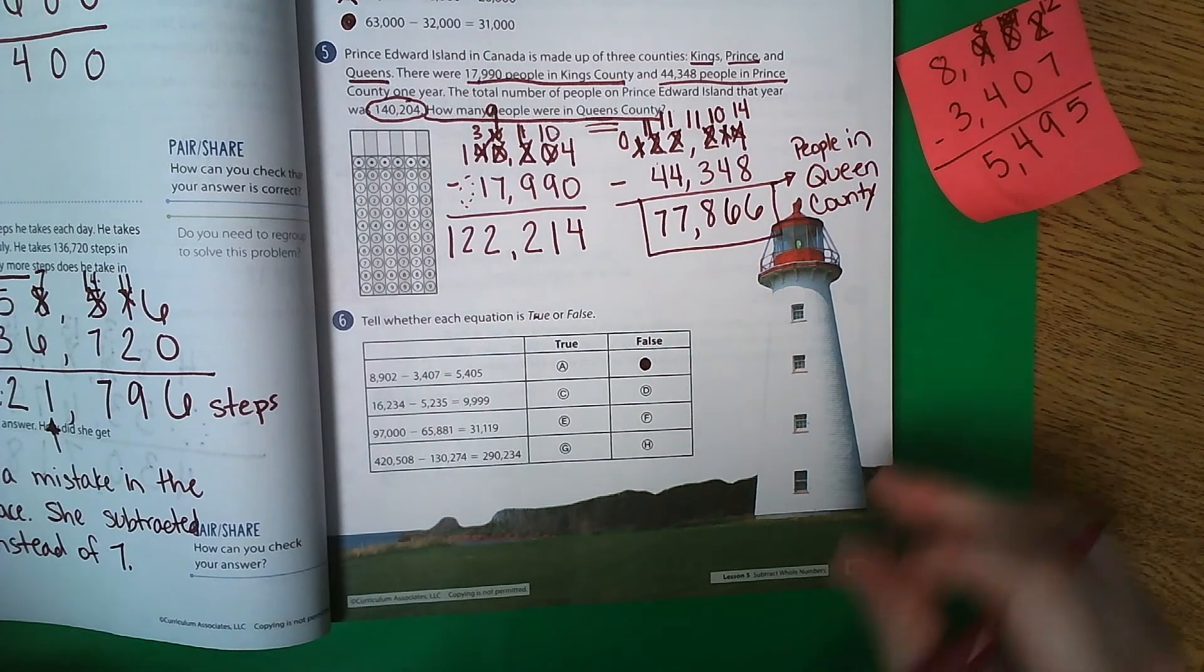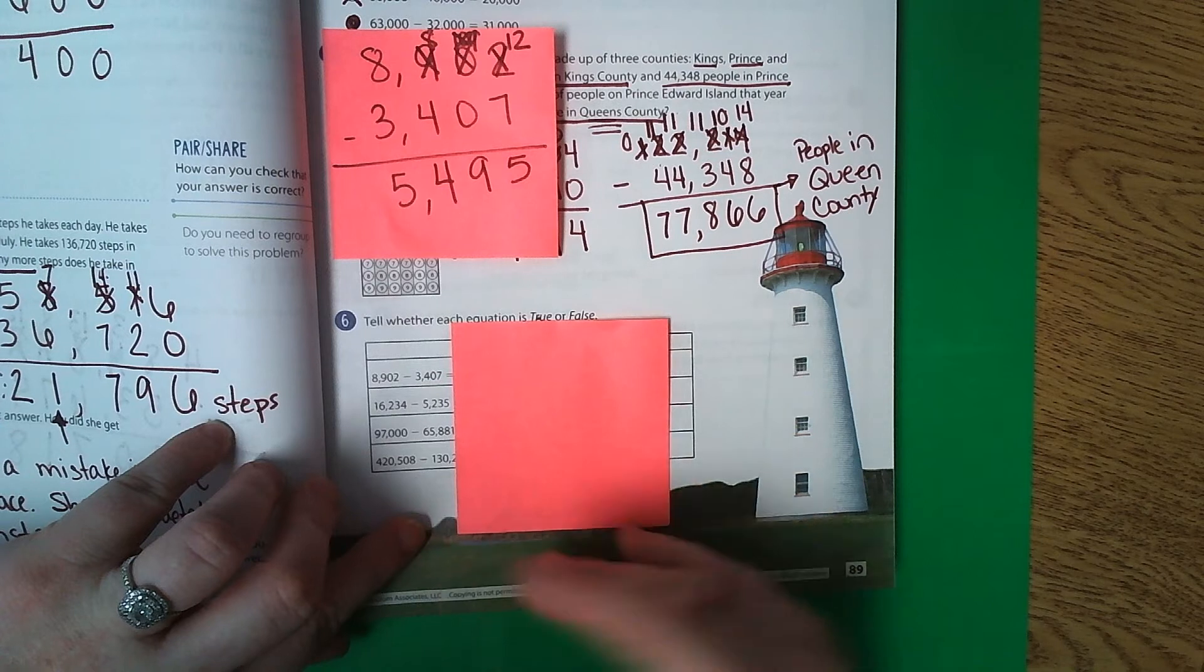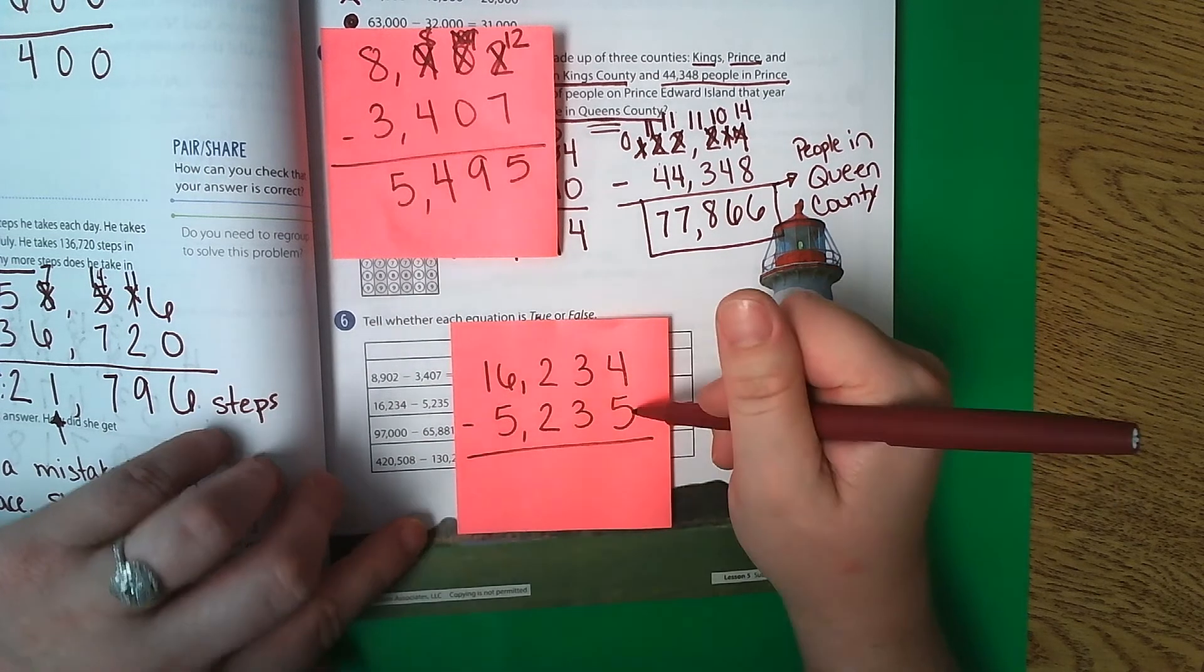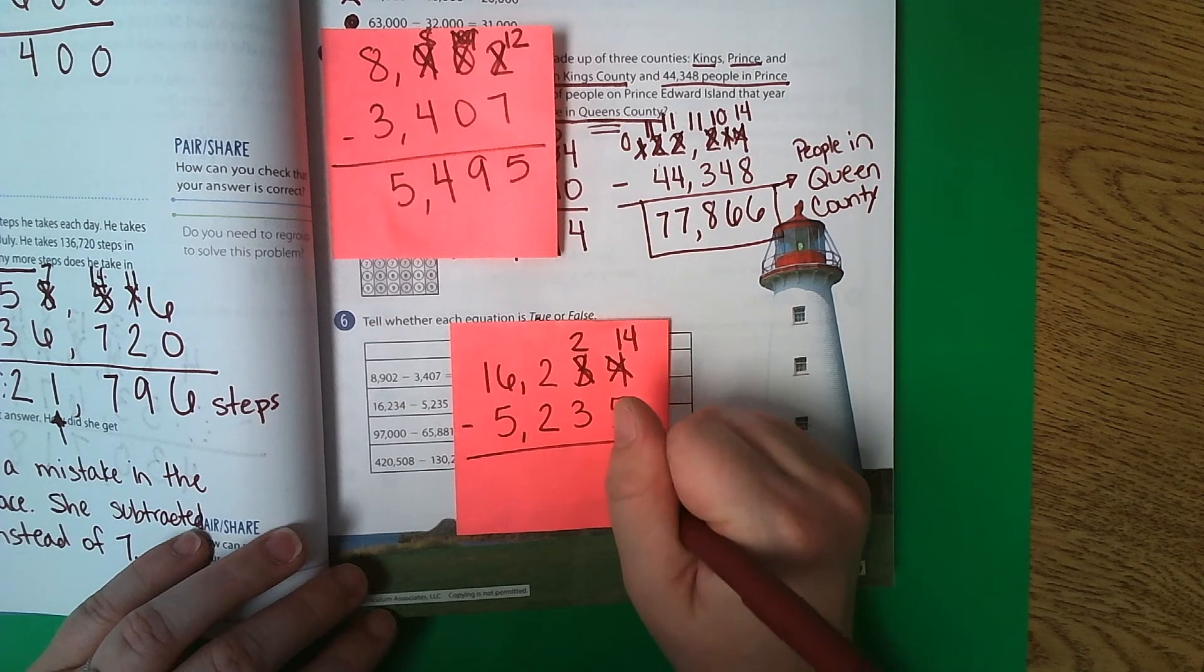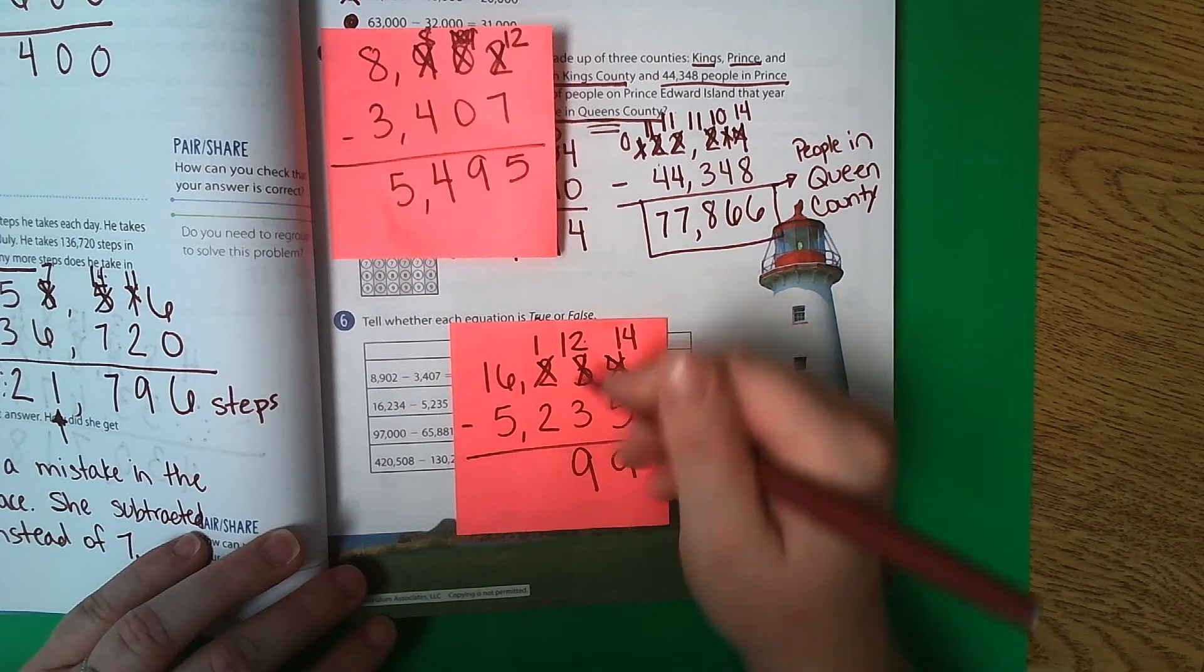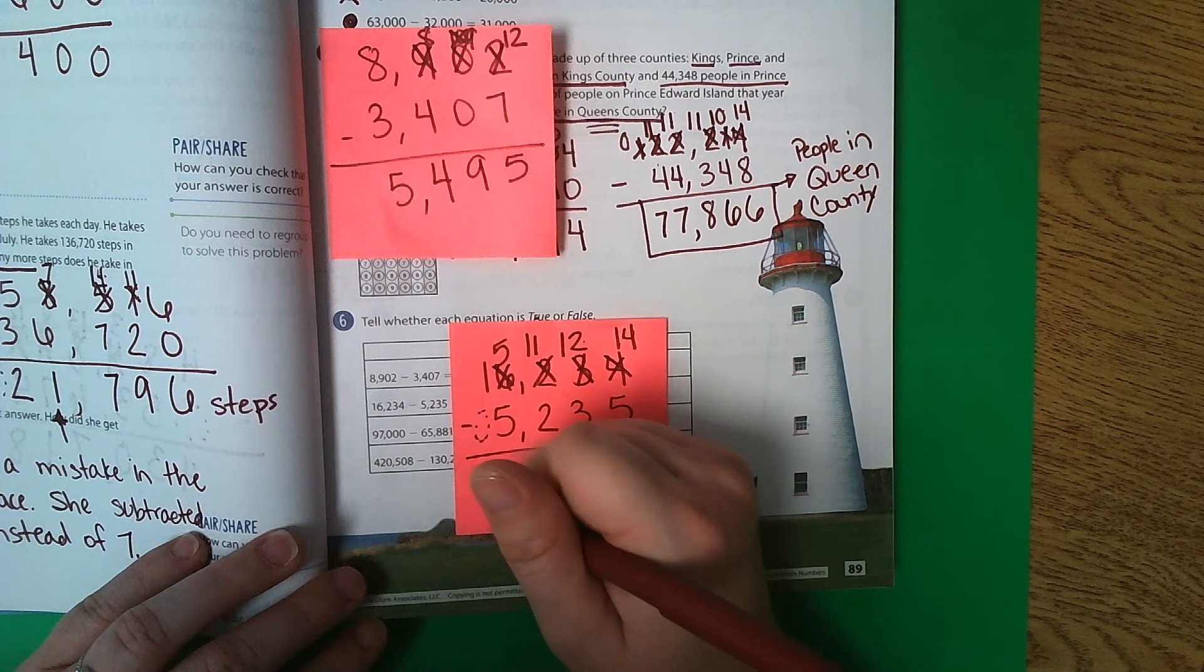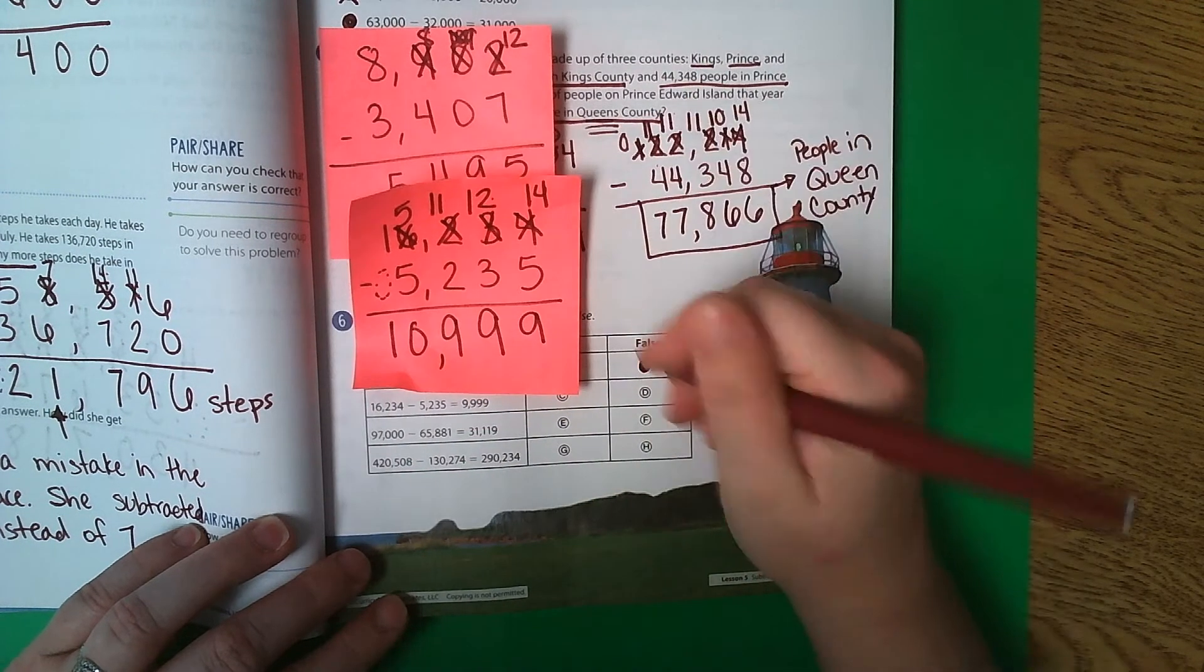Our next one here. 16,234 minus 5,235. 4 minus 5, I cannot do that. So this becomes a 2. 4 becomes 14. 14 minus 5 is 9. 2 subtract 3, I cannot do that. This becomes a 1, that becomes a 12. 12 minus 3 is 9. 1 subtract 2, I cannot do that. So this becomes a 5, this becomes 11. 11 subtract 2 is 9. 5 subtract 5 is 0. And 1 with our invisible 0 just comes down as 1. So 10,999. Let's check our answer. Is that what we got? No. So this is false.